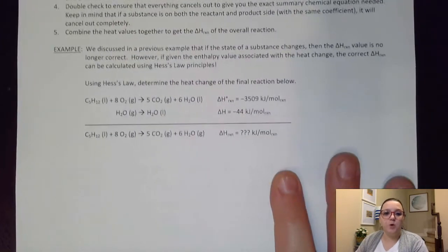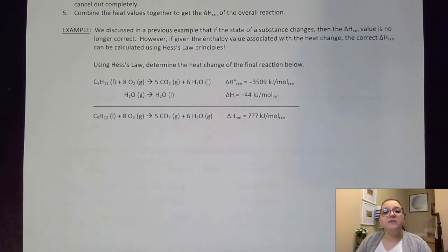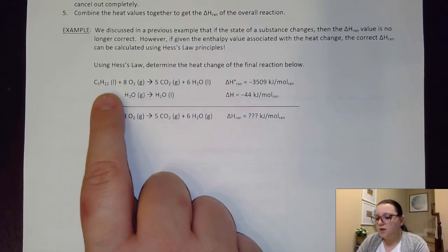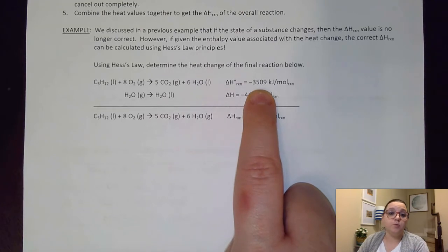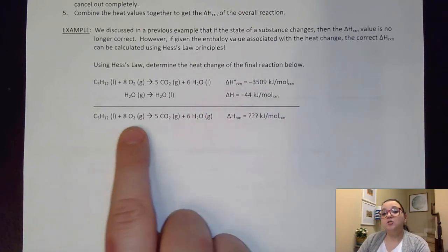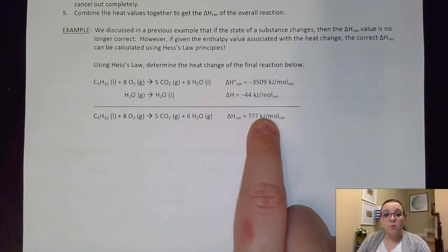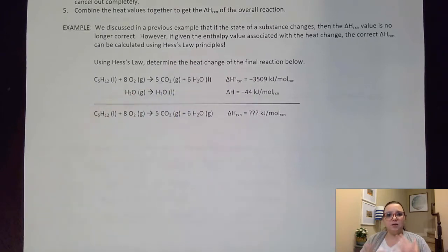Let's look at a couple of examples. In a previous video, we discussed that if the state of a substance changes, then the delta H of the reaction is no longer correct. Here we have liquid pentane undergoing combustion. When the combustion happens and liquid water is produced, the heat change would be negative 3509 kilojoules per mole of the reaction. However, if that combustion takes place where water vapor is produced, that heat change is no longer valid. They've also given us the heat change associated with going between a gas and a liquid for water, which will be the helpful piece to do this calculation.